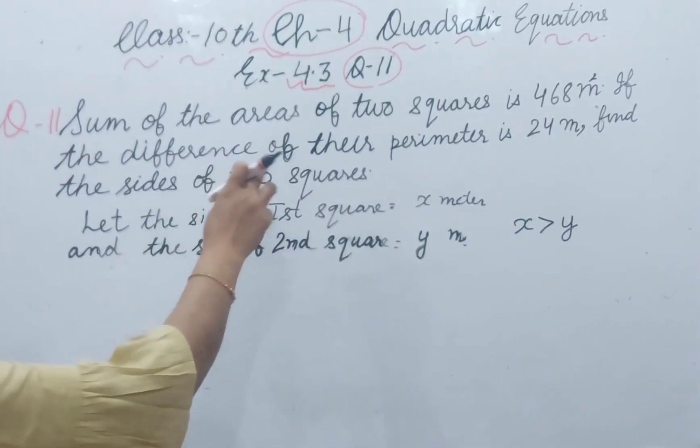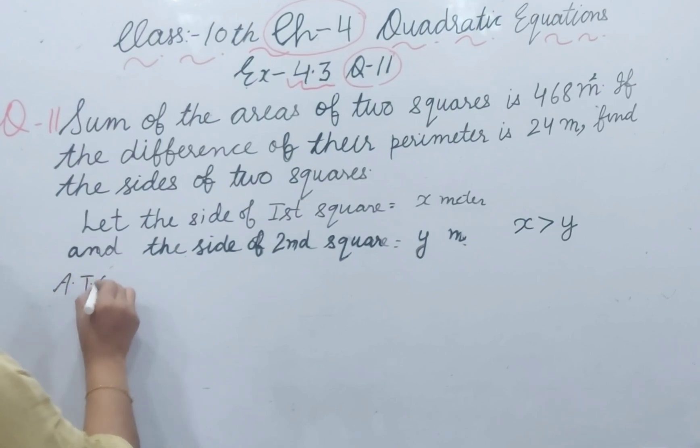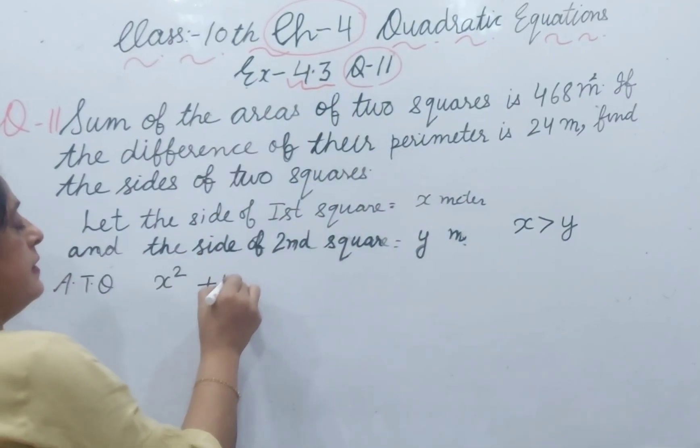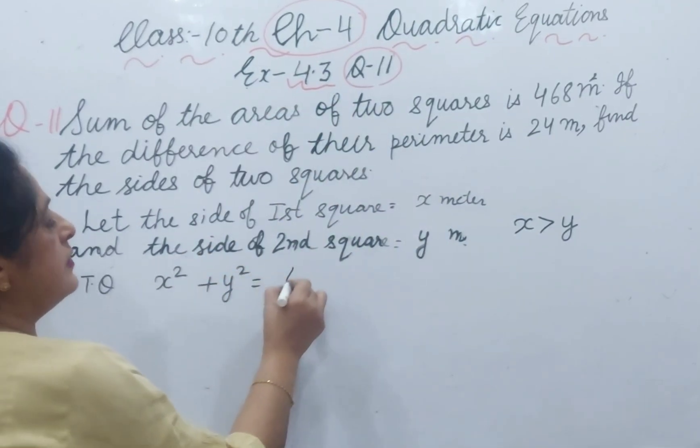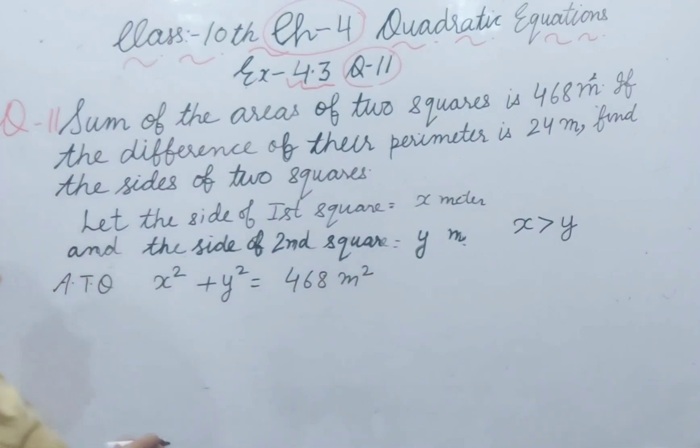Sum of areas of two squares. According to question, x square plus y square equals 468 meter square.